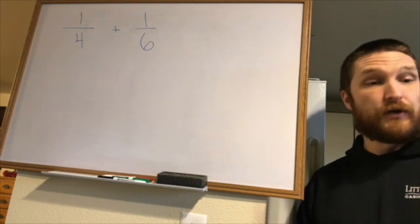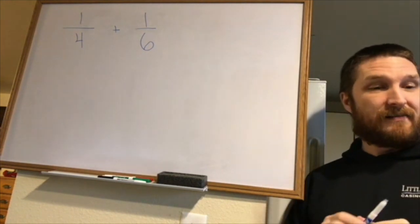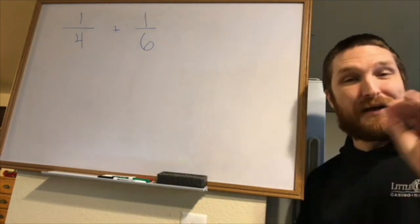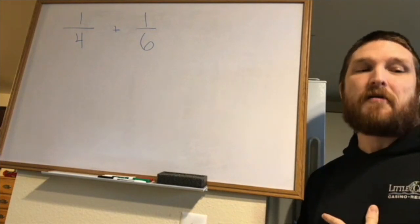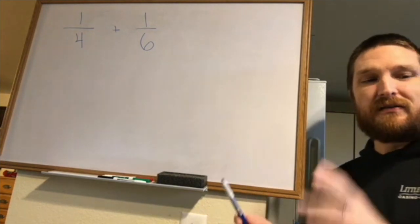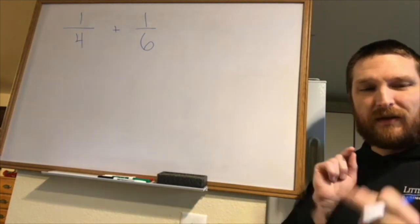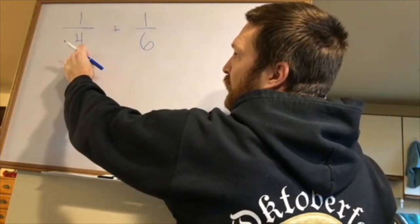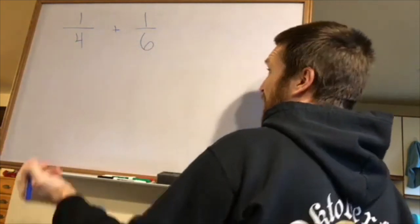There are a bunch of different ways we could do this. One way — and you've probably heard this a hundred times — is cross-multiply and divide. In order to get a common denominator, we could just say a common denominator would be four times six. We could multiply this one by six and multiply this one by four, and that will give us a common denominator.